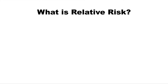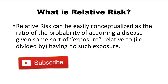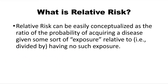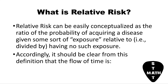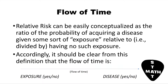What is relative risk? Relative risk can be easily conceptualized as the ratio of the probability of acquiring a disease, given some sort of exposure, relative to — that is, divided by — having no such exposure. It should be clear from this definition that the flow of time is from exposure (yes or no) to disease (yes or no).